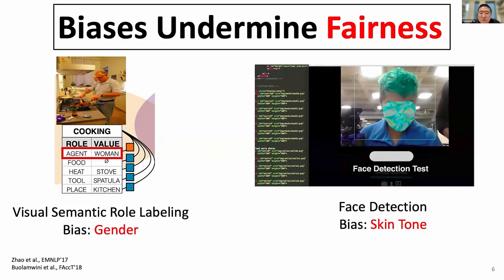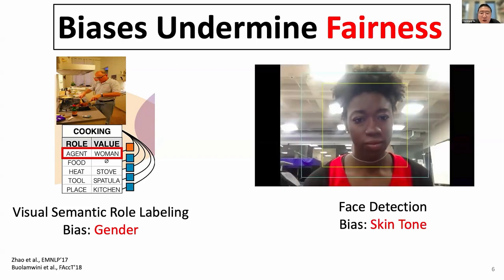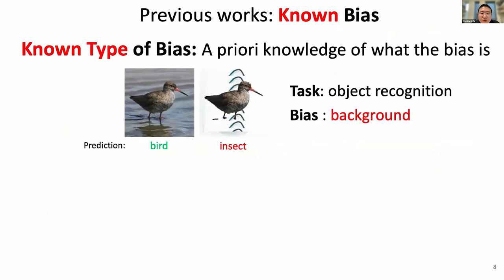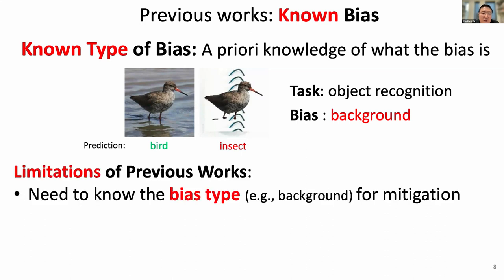People also find that commercial face recognition algorithms have a higher error rate for people with darker skin tones. Therefore, it's important to address or mitigate those bias problems. However, when studying the bias problem literature, we found that all those bias methods assume that those biases are pre-known. For example, in this case, the type of bias — which is the background — is known.